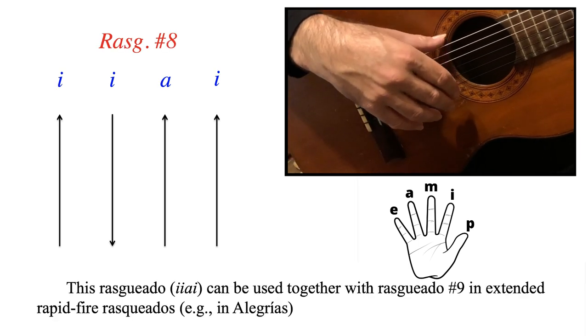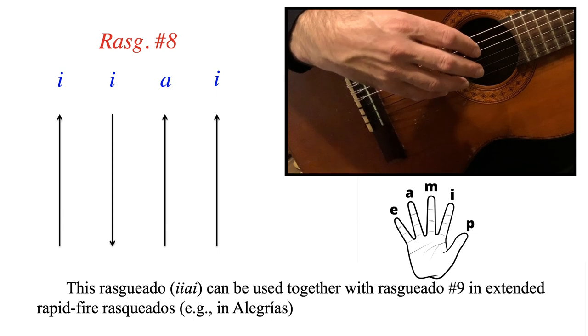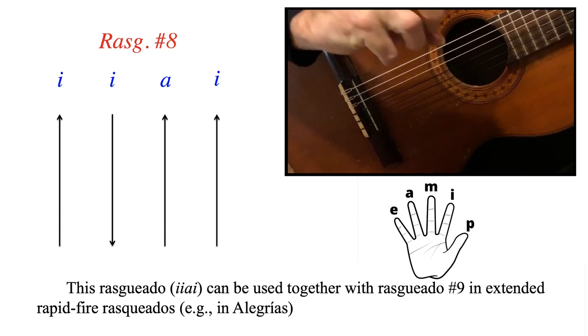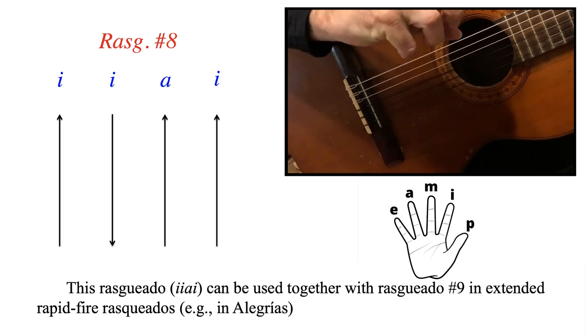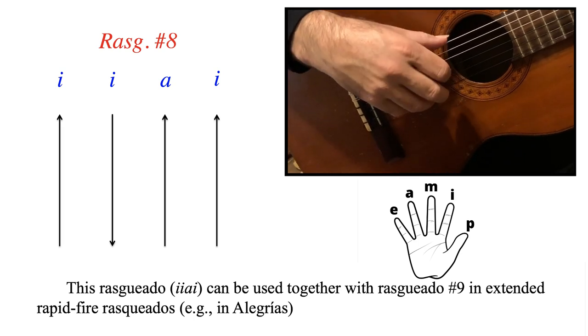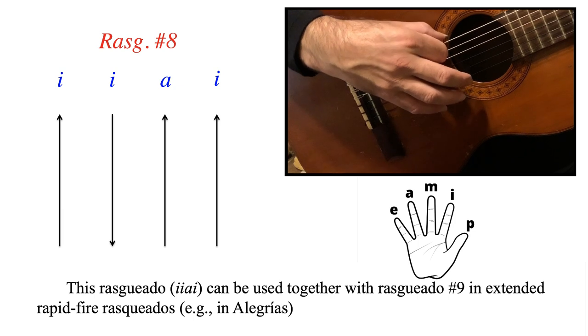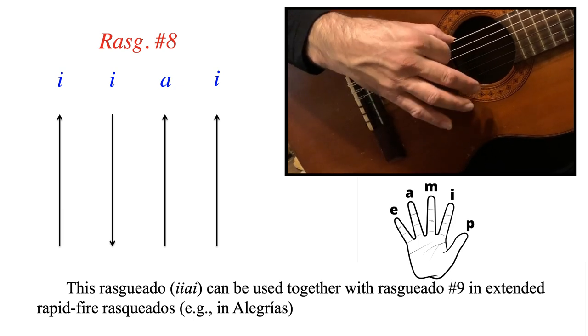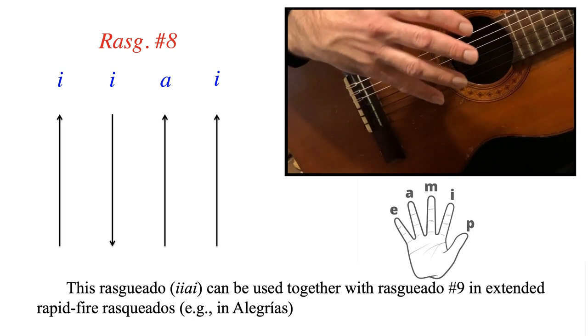Rasqueado number 8. This one can be used together with number 9, which I'll show you in the next slide. And it could be used for extended rapid fire rasqueados that you need for Alegrias. This one has I downward, upward I, downward A, and downward I. So this one is quite different from all the other ones that we reviewed.